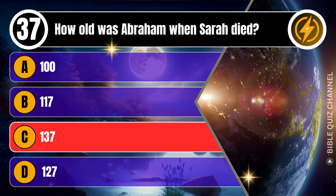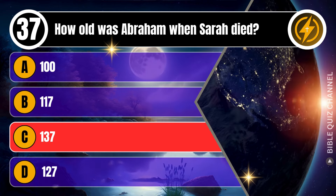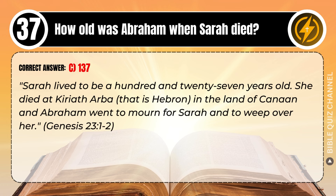Correct answer: C. 137. Explaining the Bible — Sarah lived to be 127 years old. She died at Kiriath Arba, that is, Hebron, in the land of Canaan. And Abraham went to mourn for Sarah and to weep over her. Genesis, chapter 23, verse 1-2.